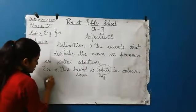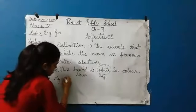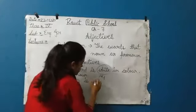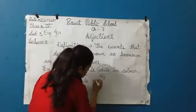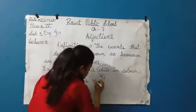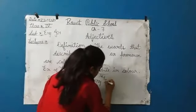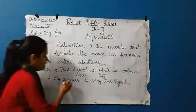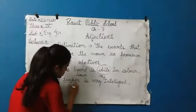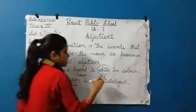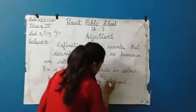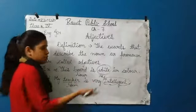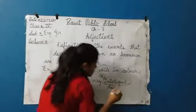Second example: My teacher is very intelligent. 'Teacher' is the noun. What is the teacher? It says 'intelligent.' The word 'intelligent' describes the noun 'teacher,' so here 'intelligent' is the adjective.